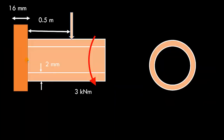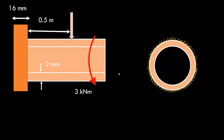Looking at the same diagram: we have the pipe and the plate; the moment and the force are applied with their dimensions shown. If you look from the side, the pipe shows the circular dimension and the weld is done all along the periphery. Let T be the throat thickness of this weld. We now need to find what stresses are generated inside this weld.